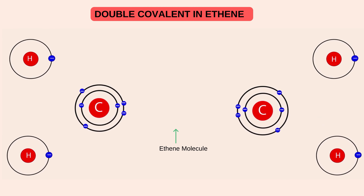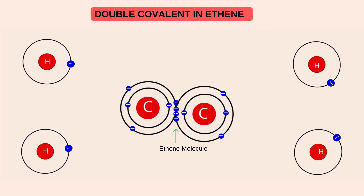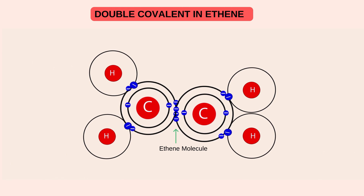Double covalent bond ki dusri example mein ethene ki example hai. Ethene, jis se C2H4 se represent kiya jata hai. Is mein bhi carbon atom, jaisa ke humne oopper discuss kare chukhe hai, stability achieve karne ke liye carbon ko mazeed 4 electron ki zarurat hai. Carbon atom dusri carbon atom ke saat dho dho valence electron ki sharing kerta hai aur double covalent bond banata hai. Jabke baqi ke electron ko mukammal karne ke liye, ye hydrogen ke saat single covalent bond banata hai.